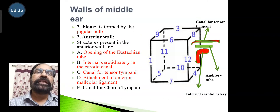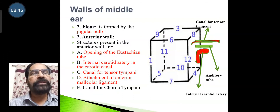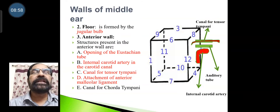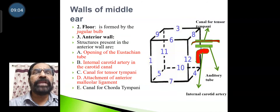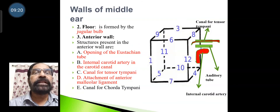The lateral wall has already been covered. The floor is formed by the jugular bulb. The anterior wall contains the opening of the auditory tube, the internal carotid artery in the carotid canal, the canal for tensor tympani, and the attachment of the anterior malleolar ligament.